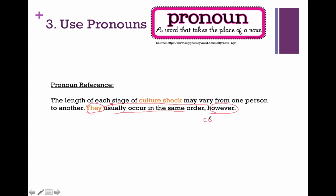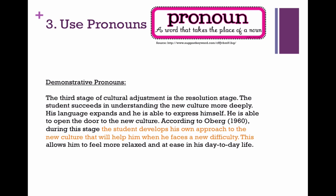Remember, 'however' is telling me there's a contrast. So if I were the reader, when I get to 'they,' I stop, look back, see what it's referring to. Then because I have this signal of contrast, I can see that even though everyone has their own length of stages, they're in the same order. Now I know the connection between these two ideas.